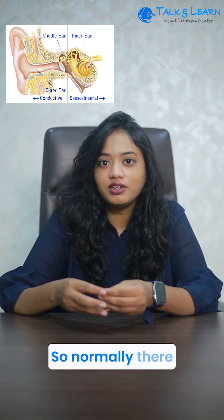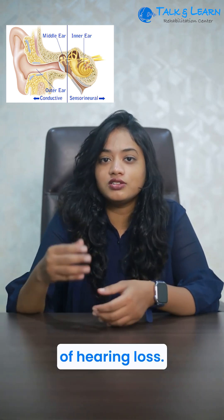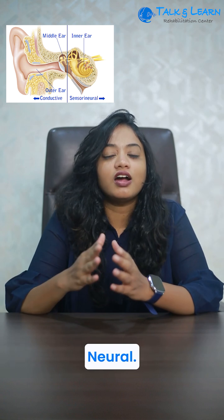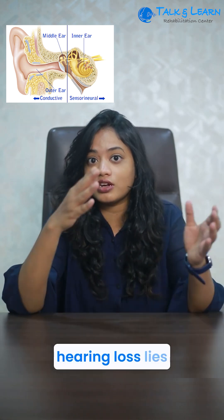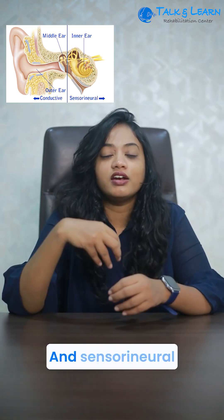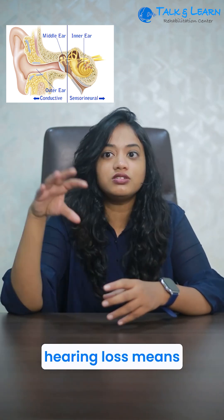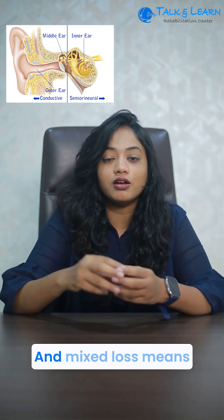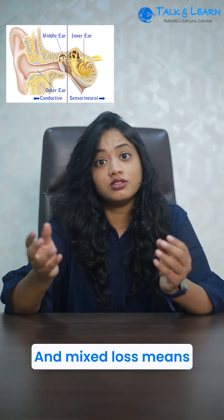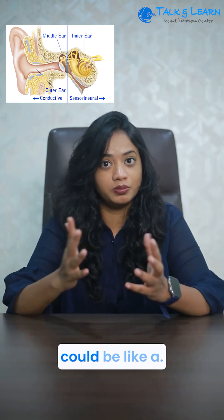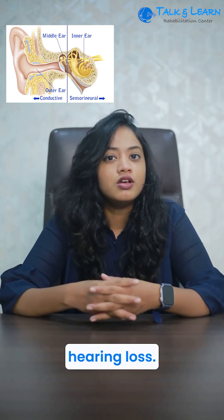Normally there are three types of hearing loss: conductive, mixed, and sensorineural. Conductive hearing loss means the reason for your hearing loss lies in your outer or middle ear. Sensorineural hearing loss means your hearing loss is due to some issues in your inner ear. Mixed hearing loss means there is a problem in both your middle ear and your inner ear.